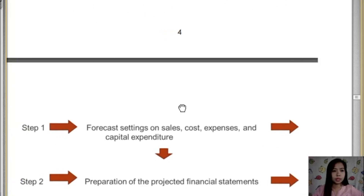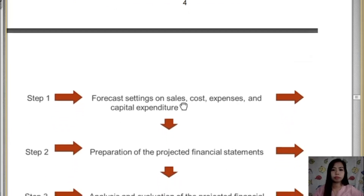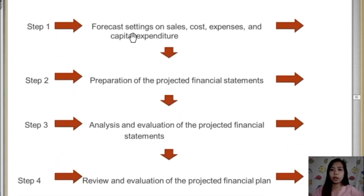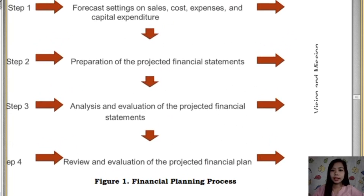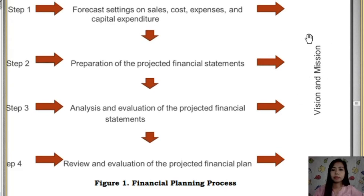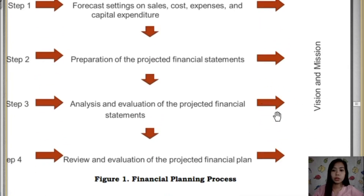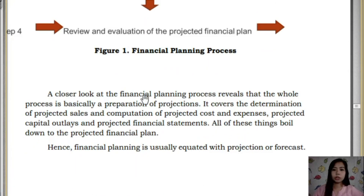To summarize the steps in a diagram: Step 1 involves assumptions on sales and costs; Step 2 is preparation of projected financial statements; Step 3 is analysis; and Step 4 is evaluation and review of projected financial trends. All of these are directed toward achieving the mission and vision. In conclusion, the financial planning process is essentially the preparation of projections and forecasts.